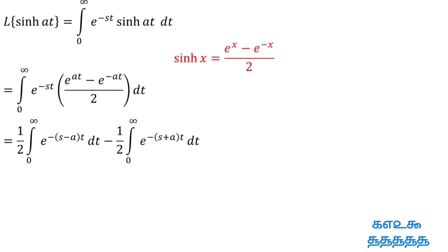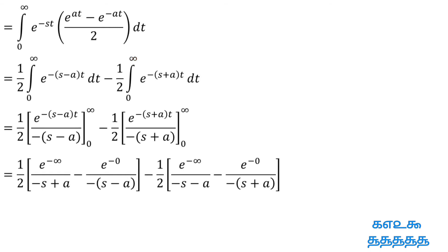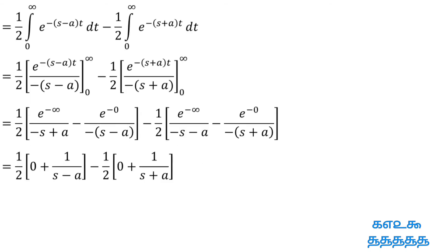Simplify the equation and integrate with respect to dt with limit 0 to infinity. Substituting upper limit minus lower limit. e^(-infinity) is equal to 0. e^(-0) is equal to 1.